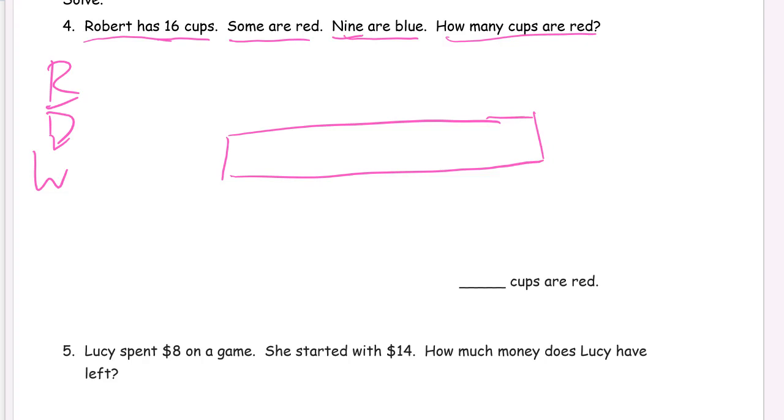We know all of the cups. There's 16 of them. We know some are red and some are blue. We know how many are blue. So some are red and some are blue. All of them, we know there's 16. We don't know how many red ones there are. But we know that there are nine blue ones. And so now this looks almost like a number bond. We're going to figure out 16 minus 9. 10 is 6. 10 minus 9 is 1. 10 and 1 plus 6 equals 7. 7 cups are red.